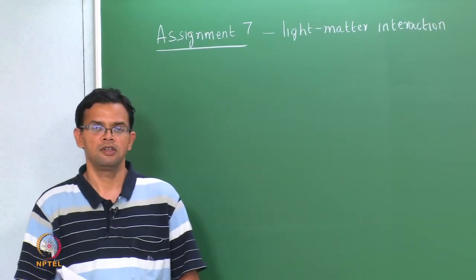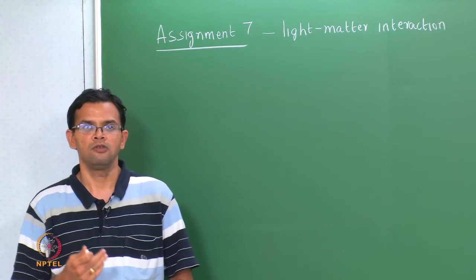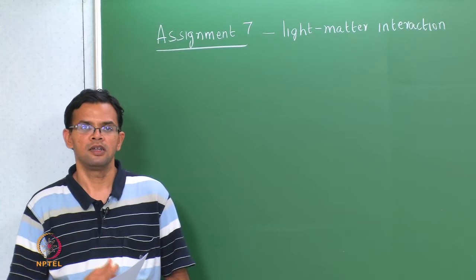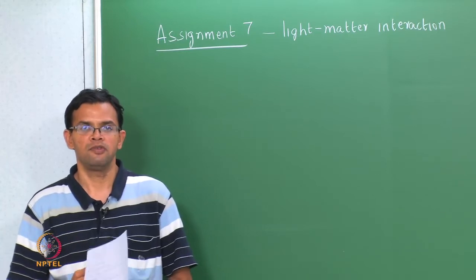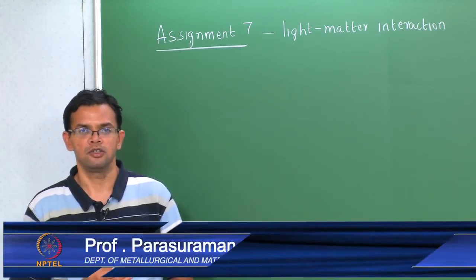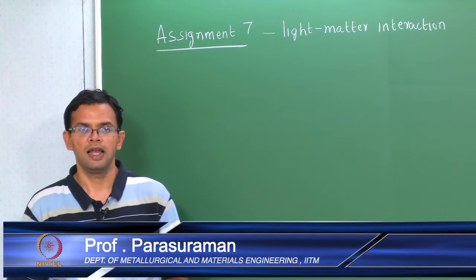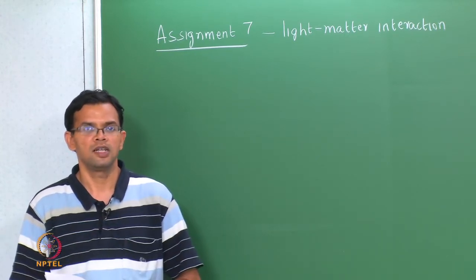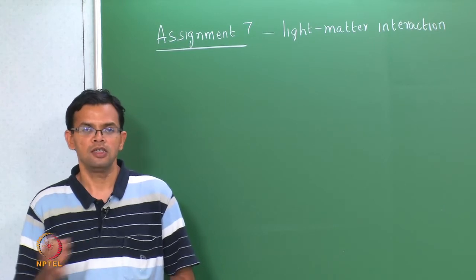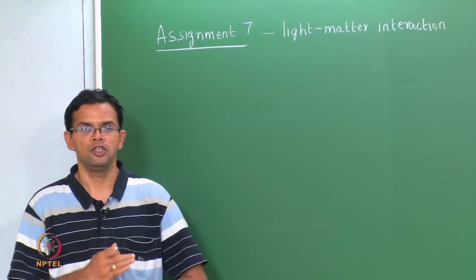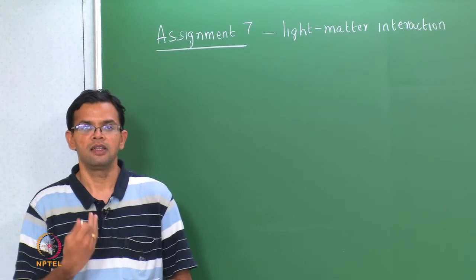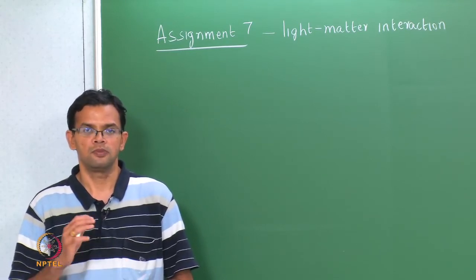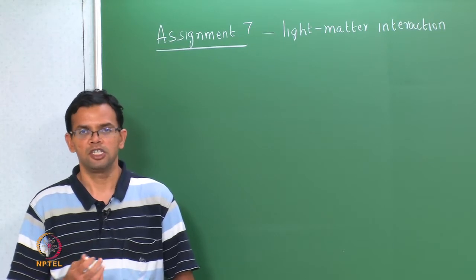During the course of the lecture we first studied how generally light interacts with semiconductor materials. We then looked at some specific examples and applications: LEDs, photodiodes, lasers, solar cells and so on. In this assignment we will focus on the general interaction and in the next one we will take up problems related to those specific devices.